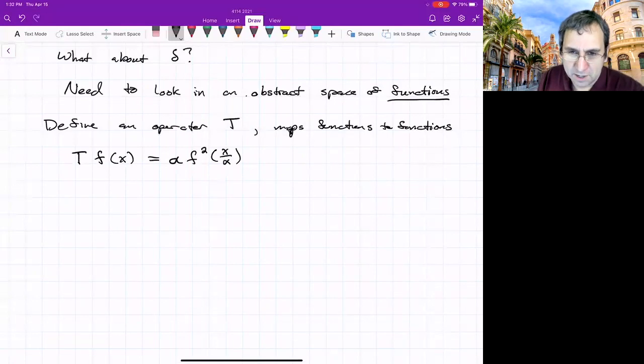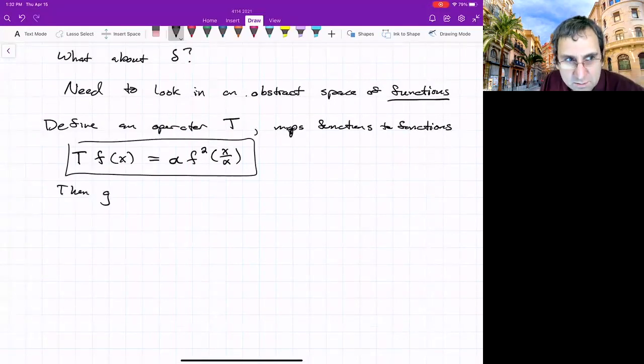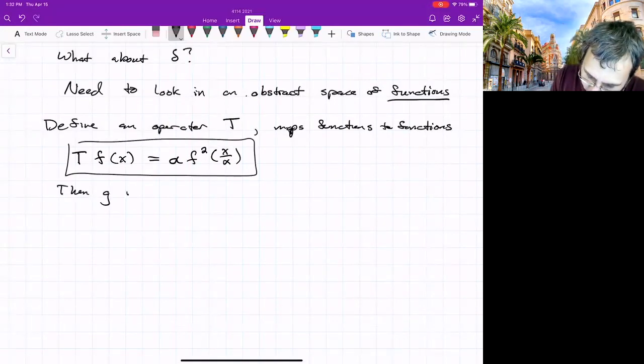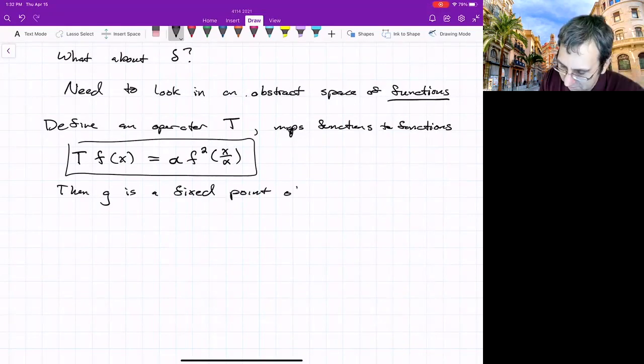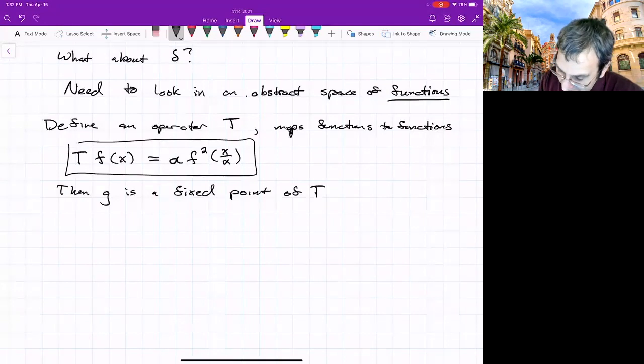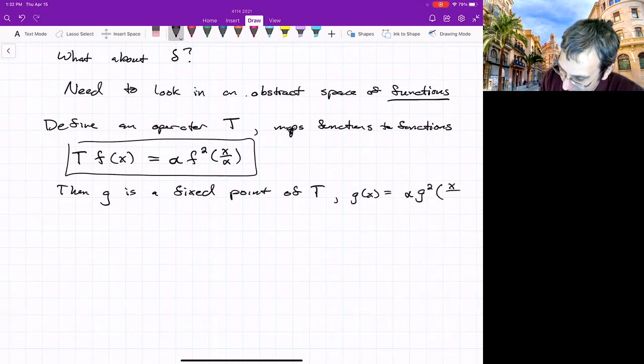That g function, g is a fixed point of T in the space of all functions, right? Because g of x equals alpha times two iterates of g on x over alpha.